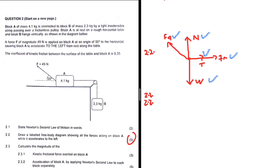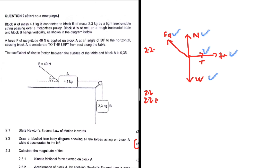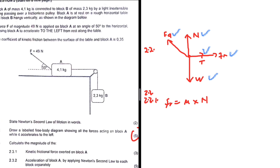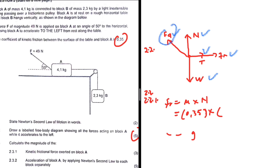Question 2.3.1: calculate the magnitude of the kinetic frictional force acting on block A. The kinetic frictional force equals the coefficient multiplied by the normal force. The coefficient between the table surface and block A is 0.35. All we need is the normal force. Note that the normal force is not simply mass times gravity because of the applied force.